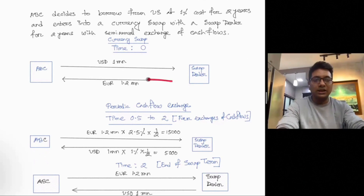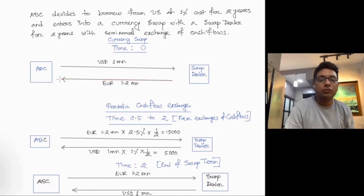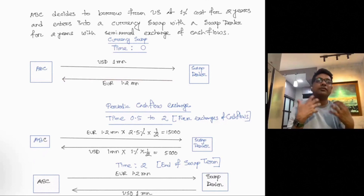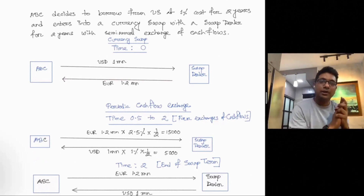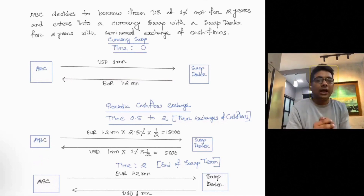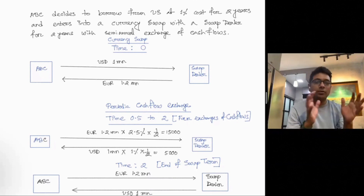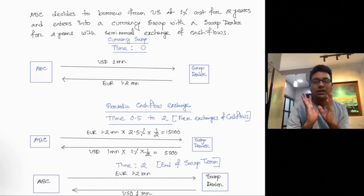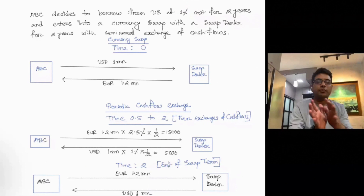Every six months, the swap dealer pays ABC 5,000 USD. Meanwhile, ABC pays the swap dealer 1.2 million multiplied by 2.5% multiplied by 0.5 for the six-month period, which equals approximately 15,000 euros every six months. This represents the periodic interest payment exchange between the two parties throughout the swap term.